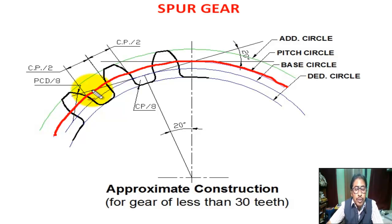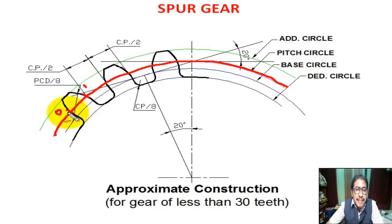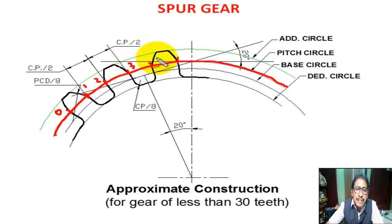We take a measurement on the pencil compass equal to tooth thickness CP / 2, then mark points along the pitch circle: point 0, point 1, point 2, point 3, point 4, and point 5 at equal spacing of CP / 2.